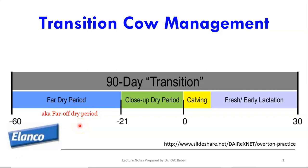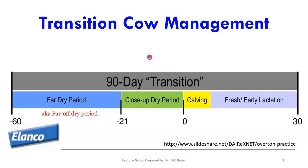During the previous lecture we talked about the drying off procedure. In this lecture on transition cow management, we will talk about the actual dry cow period. The transition cow period has been defined differently by various books — some refer to a 90-day transition including all of the dry period plus the first 30 days after calving, while others use a 60-day or 51-day transition covering three weeks prior to calving and 30 days after.